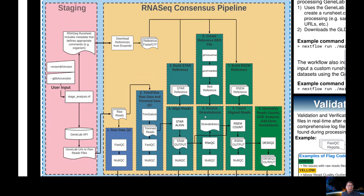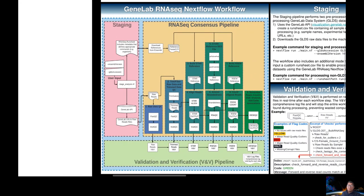We then combine the assessed strandedness, the STAR alignments, and an RSEM reference to generate our unnormalized gene counts. Those gene counts are then normalized before undergoing gene expression analysis with DESeq2. Additional gene annotations are added to generate a final annotated DGE output table. I'll also be covering the two associated pipelines — staging and VNV — that work together with the core processing pipeline.